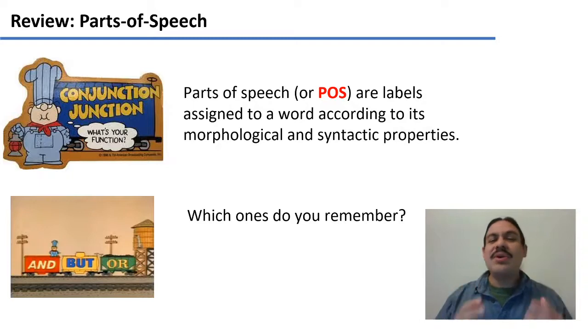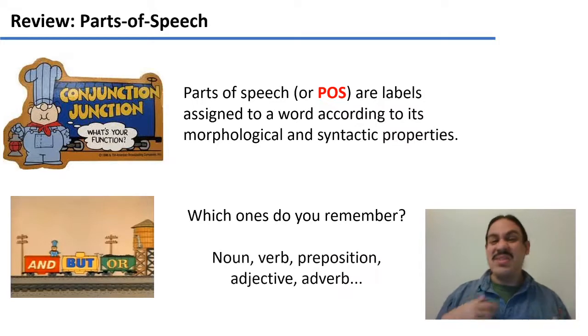So in summary, parts of speech are labels like noun, verb, adjective that we assign to a word according to its properties. Maybe it's morphological properties, maybe it's syntactic properties or positional properties. Which ones do you remember from school? You remember things like nouns, verbs, adjectives and so forth.